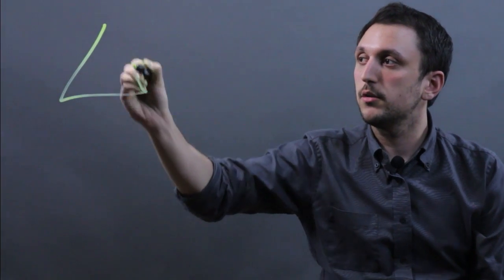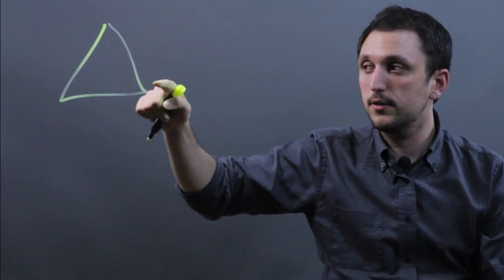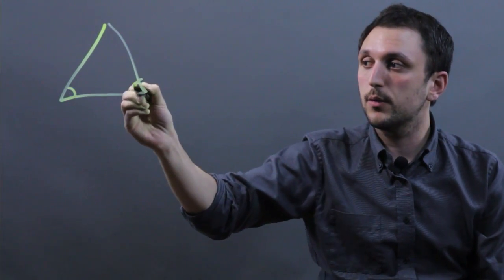So first let's look at an equilateral triangle. An equilateral triangle is a triangle in which all three sides are equal and all three angles are equal.